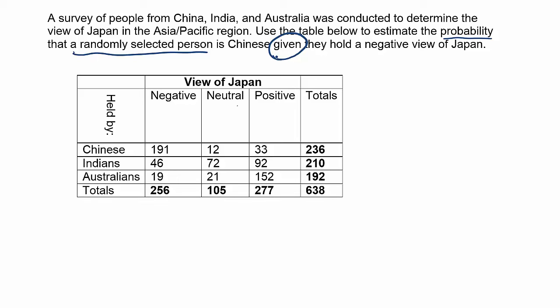So if it's conditional probability, I should write out the formula. The formula says: probability of — in this case — the probability of the person is Chinese. That's what we want to know. Some of you might just write out 'Chinese'.